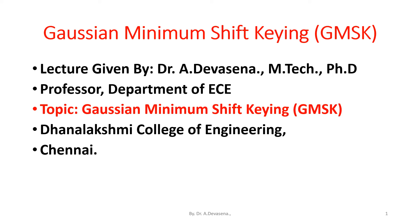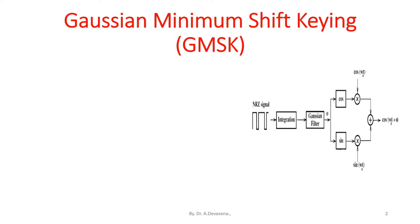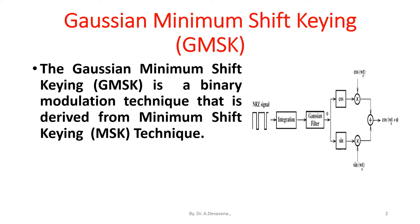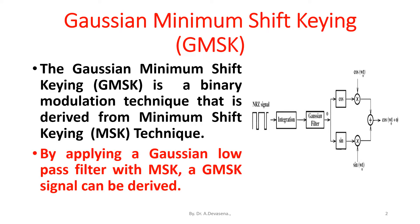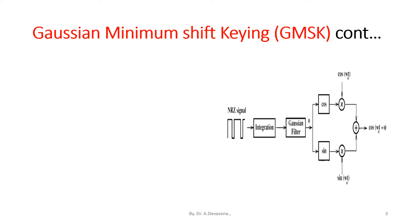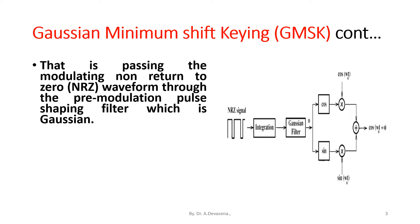Good morning, I am Devis Aina. In this lecture we are going to discuss Gaussian Minimum Shift Keying, GMSK. GMSK is a binary modulation technique that is derived from Minimum Shift Keying technique by applying a Gaussian low-pass filter with MSK. A GMSK signal can be derived by passing the modulating Non-Return-to-Zero (NRZ) waveform through the pre-modulation pulse shaping filter, which is Gaussian.